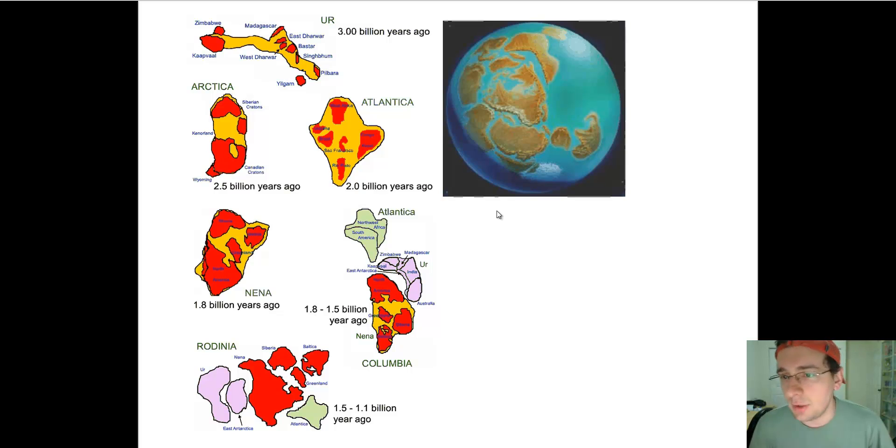And each large continent travels around the surface of the Earth because of plate tectonics, and because the Earth is a sphere, inevitably they hit each other. And so you end up getting these large supercontinents. And we'll talk about that when we do the supercontinent cycle.